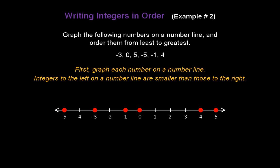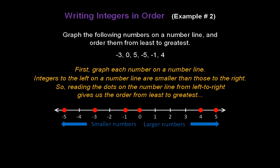Now, integers to the left on a number line are smaller than those to the right. So, reading the dots on the number line from left to right gives us the order already in least to greatest. All we have to do is read the dots from left to right: the smallest number is negative 5, then negative 3, negative 1, 0, 4, and then 5. That's the least to greatest order for those integers.